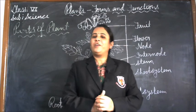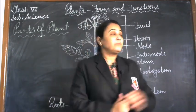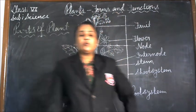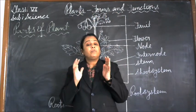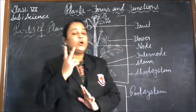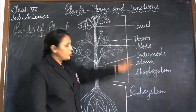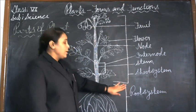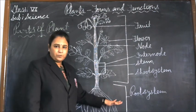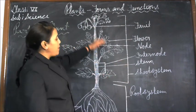Good morning students. Today we are going to study Class 6 Science chapter: Plants - Forms and Functions. The body of a plant can be divided into two main systems: root system and shoot system. The part of the plant that grows below the ground is known as root system, and the part of the plant that grows above the ground is known as shoot system.